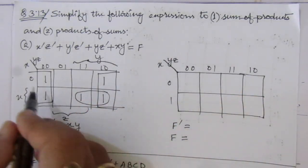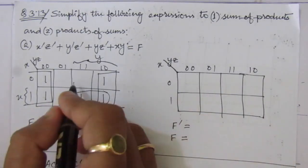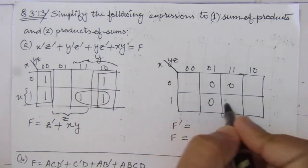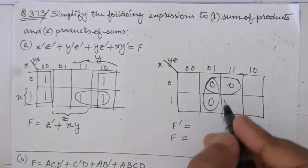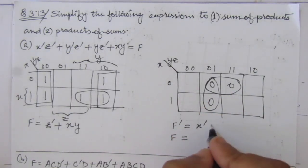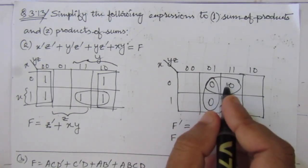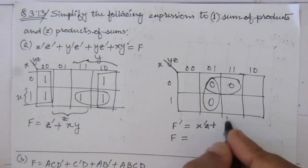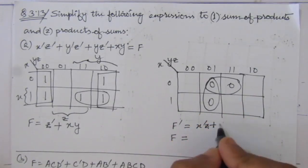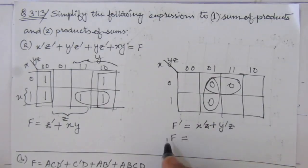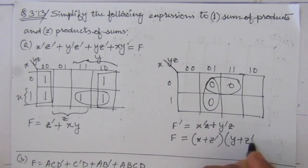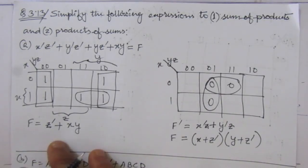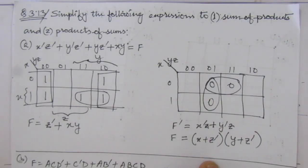All our ones are placed, so we are left with three boxes and we put zero, zero, zero, and zero. We combine these zeros: from this term we get x-bar z, and from this term we get y-bar z. So f' = x-bar z + y-bar z. Taking the complement using De Morgan's theorem, f = (x + z-bar)(y + z-bar). These are the two simplified SOP and POS expressions. The first part of the problem is complete.